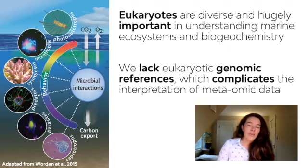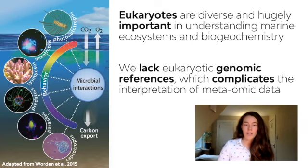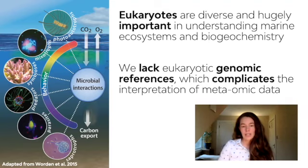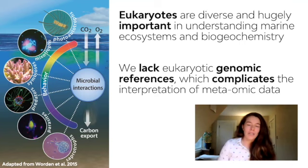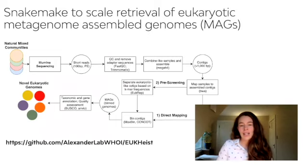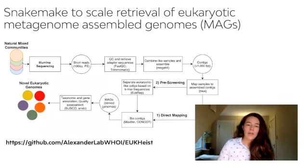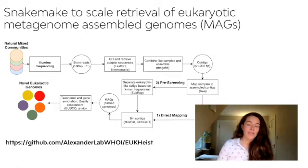Ultimately, when using omic tools to study eukaryotic microbes in the ocean, one fundamental issue we're always coming up against is the lack of eukaryotic reference information — there just aren't a lot of eukaryotic genomes available to help us interpret these data. In my talk, I will share some of the work we've been doing to develop a technique to recover eukaryotic metagenome-assembled genomes, or MAGs. These eukaryotic MAGs may be a wonderful avenue to dramatically improve our interpretation of eukaryotic metaomic data sets.